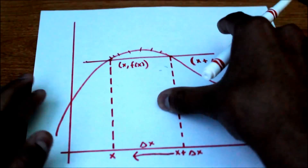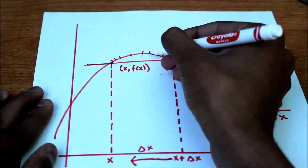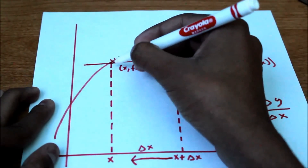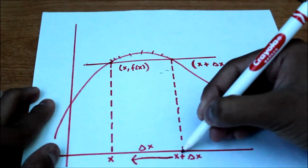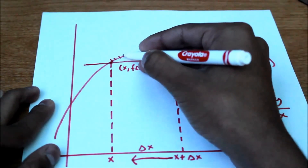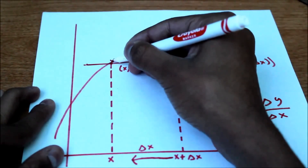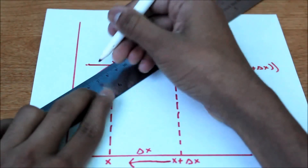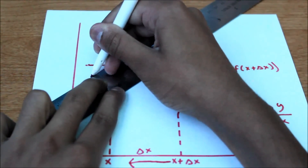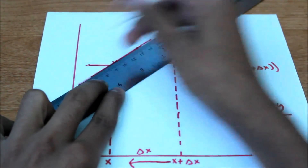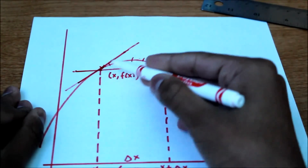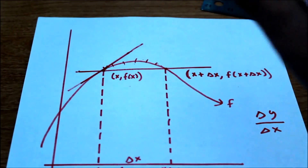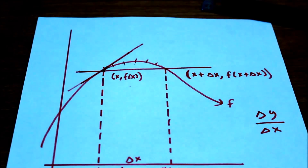What that means is: the slope of the secant line becomes the slope of the tangent line to this curve at the point x comma f of x. As delta x approaches 0, the second point comes closer and closer along the x-axis toward x, and the line becomes tangent to the curve at that point. So the derivative is essentially the slope of the tangent line to some function f of x.